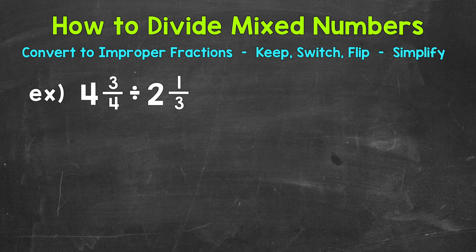Let's jump into our example where we have 4 and 3 fourths divided by 2 and 1 third. The first thing that we want to do is to convert these mixed numbers to improper fractions. That way we just have a numerator and a denominator.